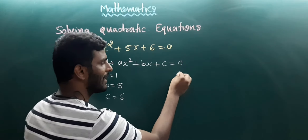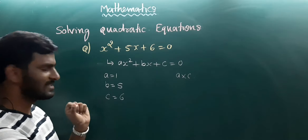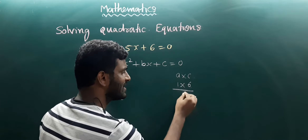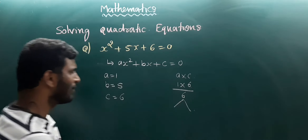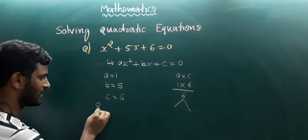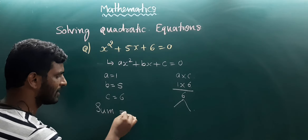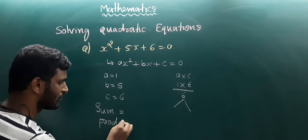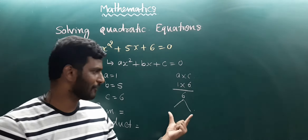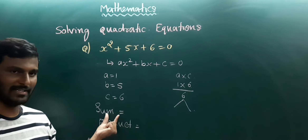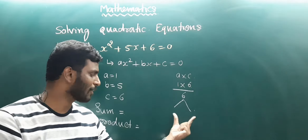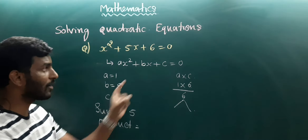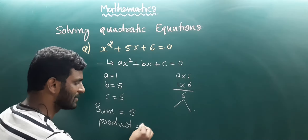Hence, we need to multiply a into c. a into c is nothing but 1 into 6, which is 6. We need to find two numbers whose product equals 6 and whose sum equals 5.